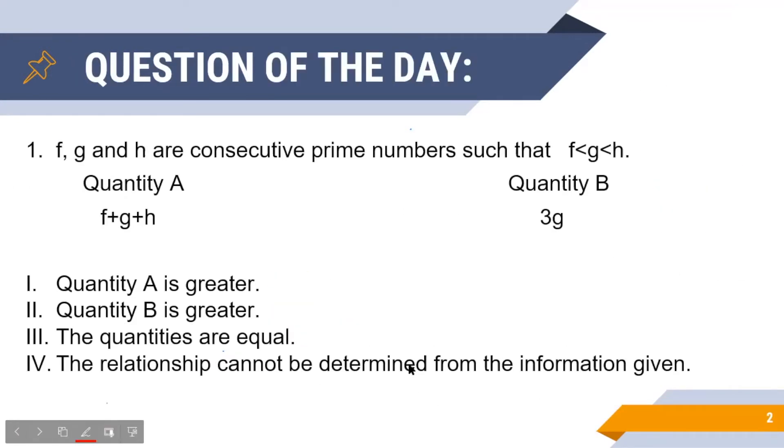Since there is no hard and fast rule as to the sum of three consecutive prime numbers, we have to substitute values for f, g and h and compute the quantities A and B and then compare them to arrive at a possible relationship between the two quantities.